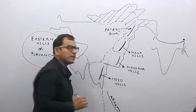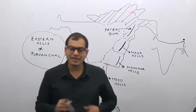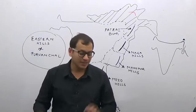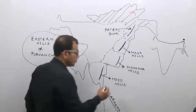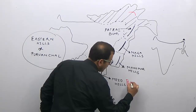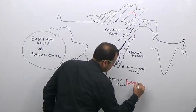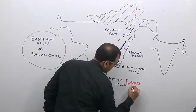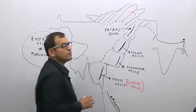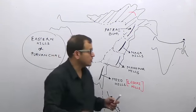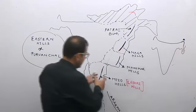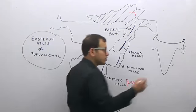The old name of the Mizo Hills is Lushai Hills or Lushai Mountains. These are the eastward continuation of the Himalayas which, after taking a sudden southward bend, continue till Mizoram.